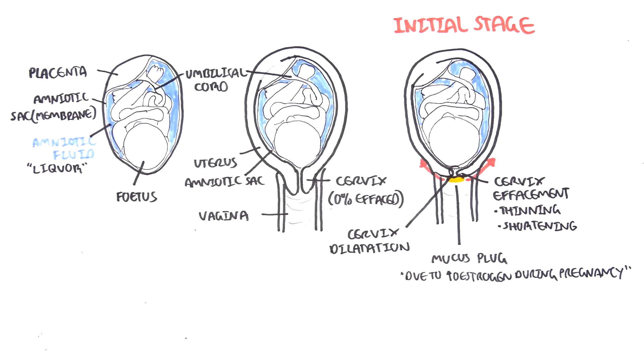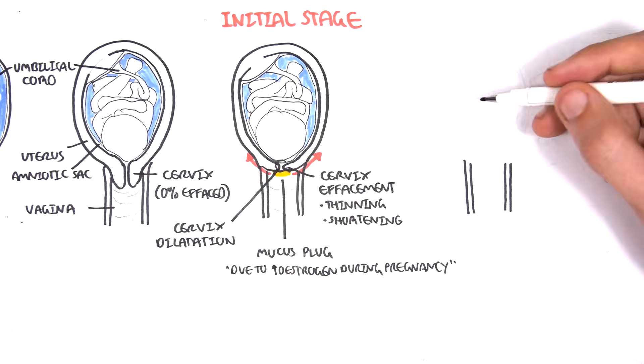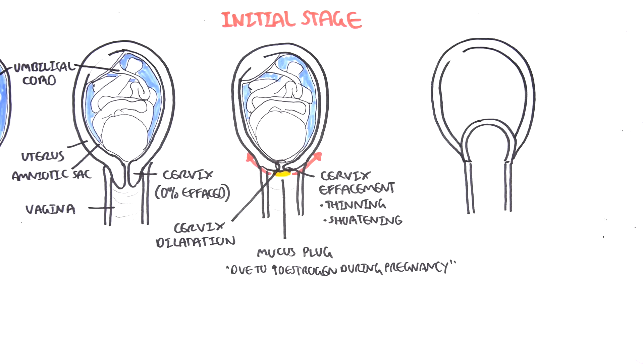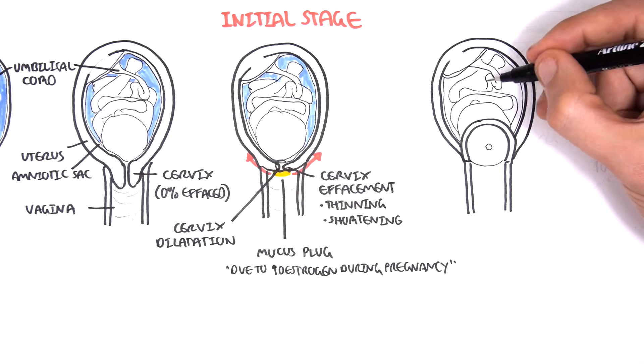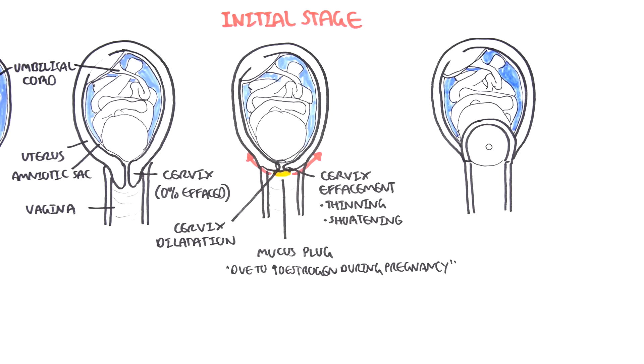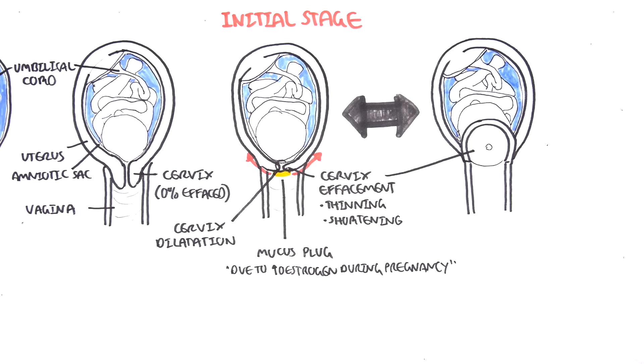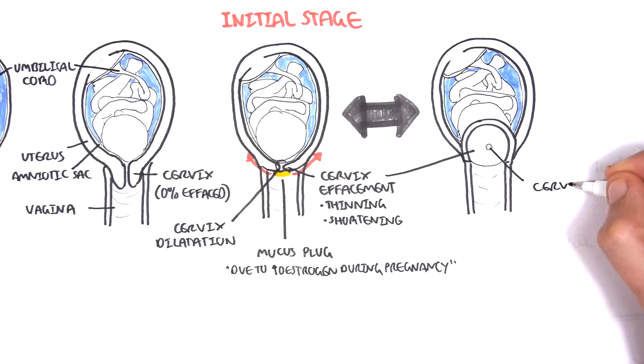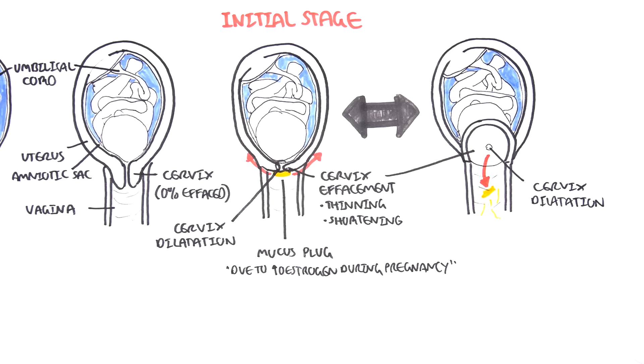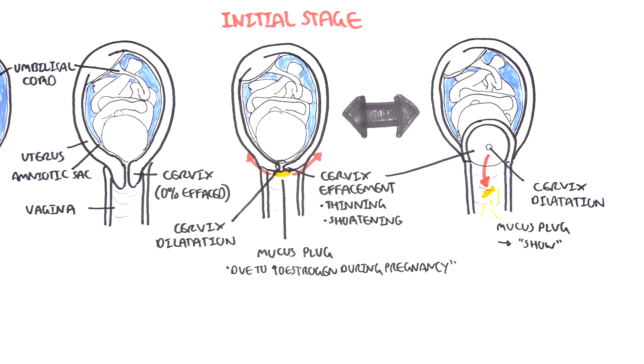When a woman enters labor the mucus plug is usually already out. So drawing out the same diagram but this time showing the whole cervix as though looking at it head on, we can see the cervix here is slightly dilated. The mucus plug has already come off. And this is what we call the show. The show is usually clear mucoid-like discharge indicating that labor is about to occur, and indicating that the mucus plug has just come off.